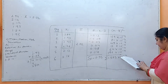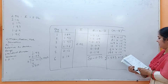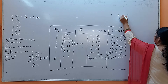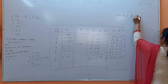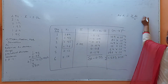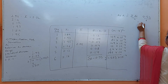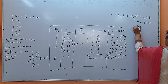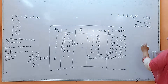Now for average deviation: the formula is summation of di divided by n. So that is 0.55 divided by 6, which comes out to be 0.0916. So d-bar is approximately 0.092.